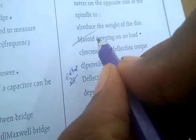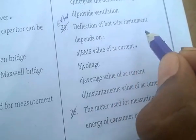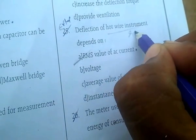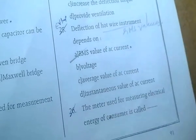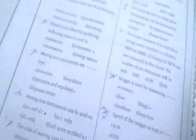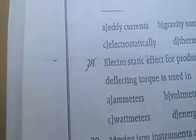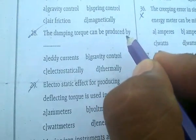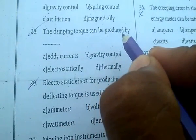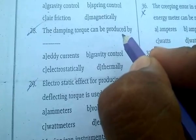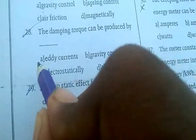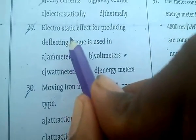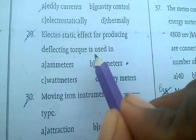On no load, the deflection of thermal (hardware) instruments depends on RMS values only. The damping torque is produced by eddy currents.